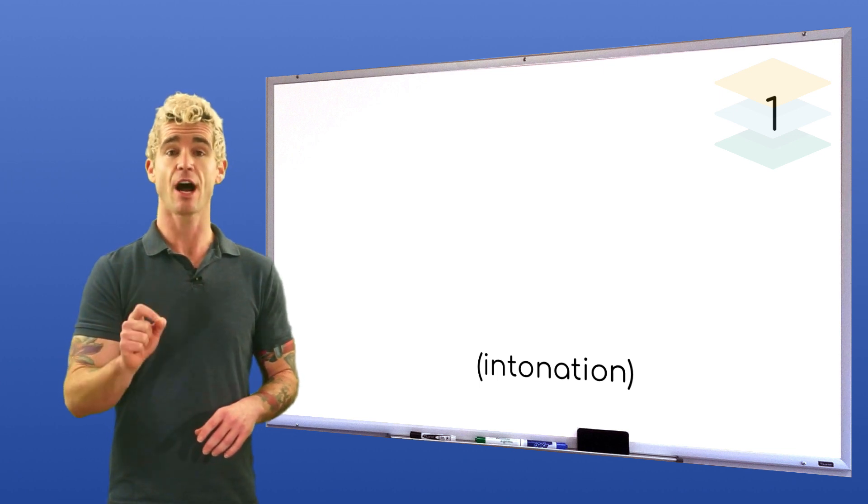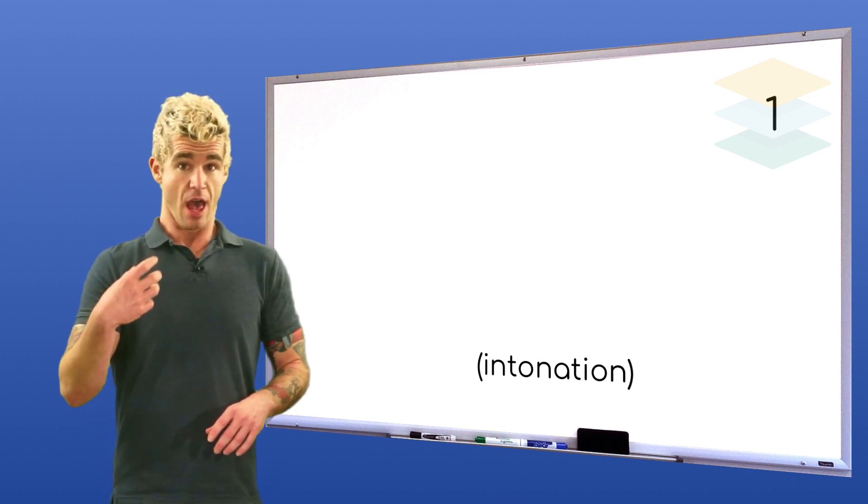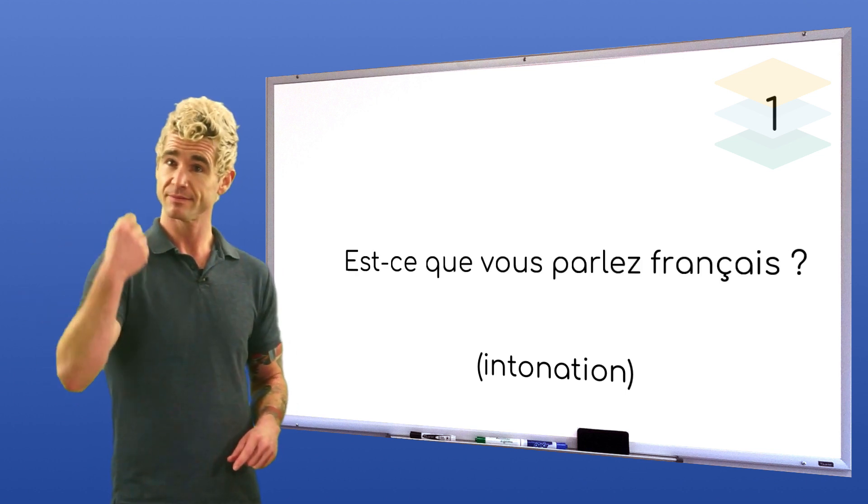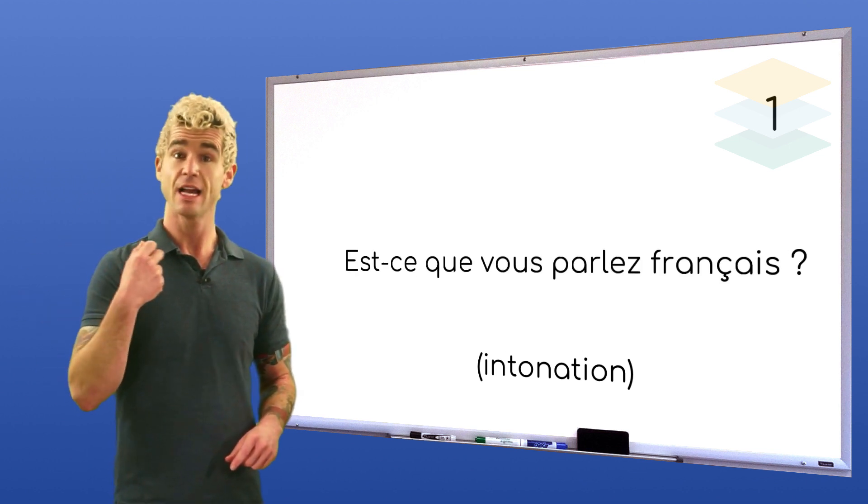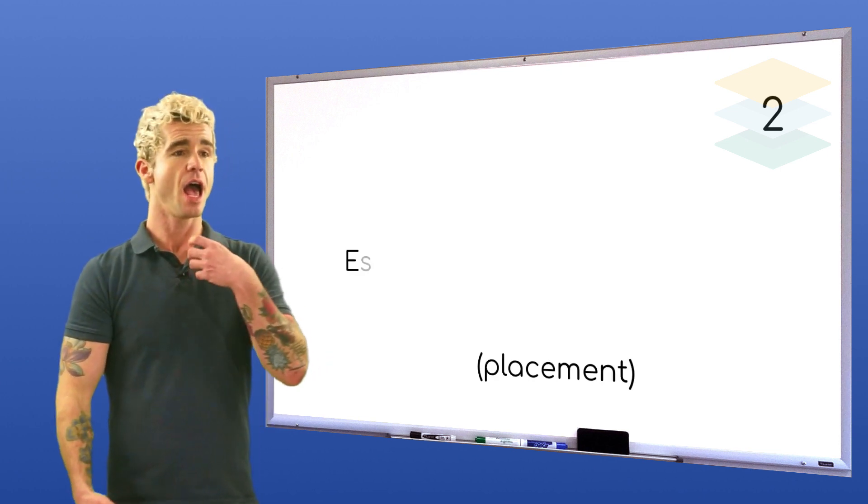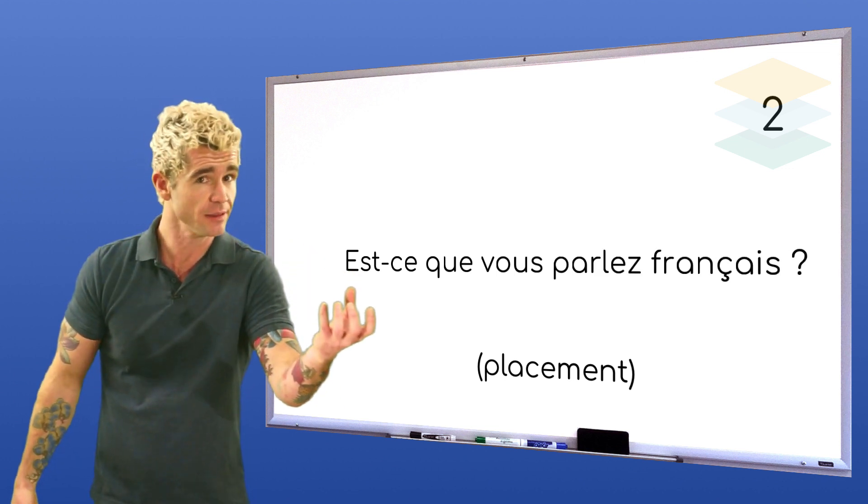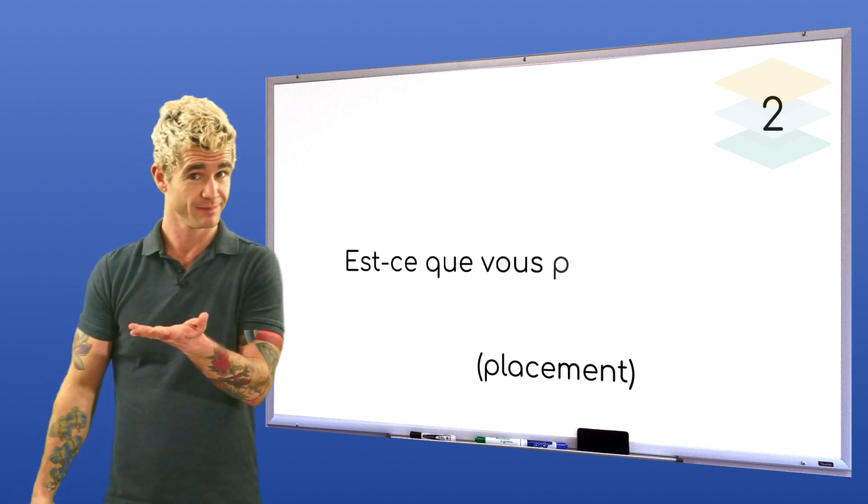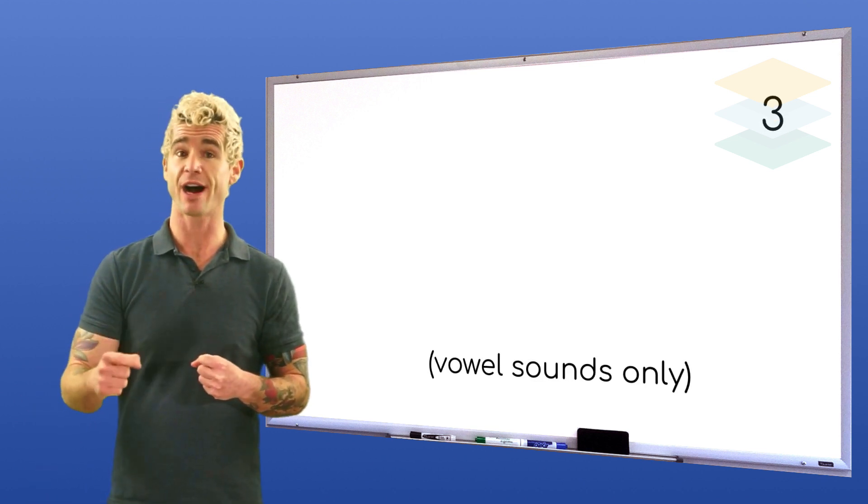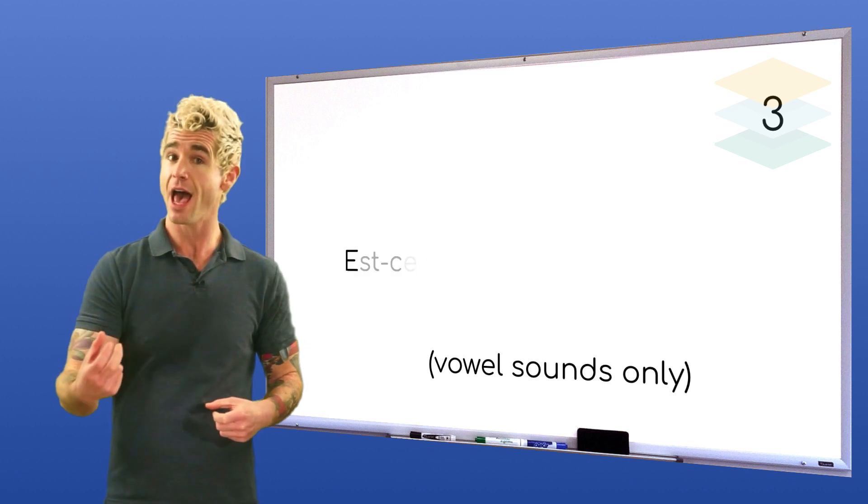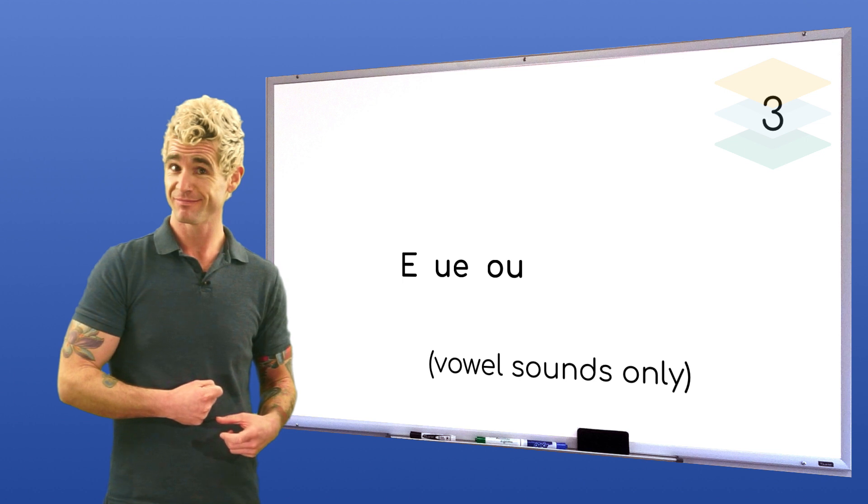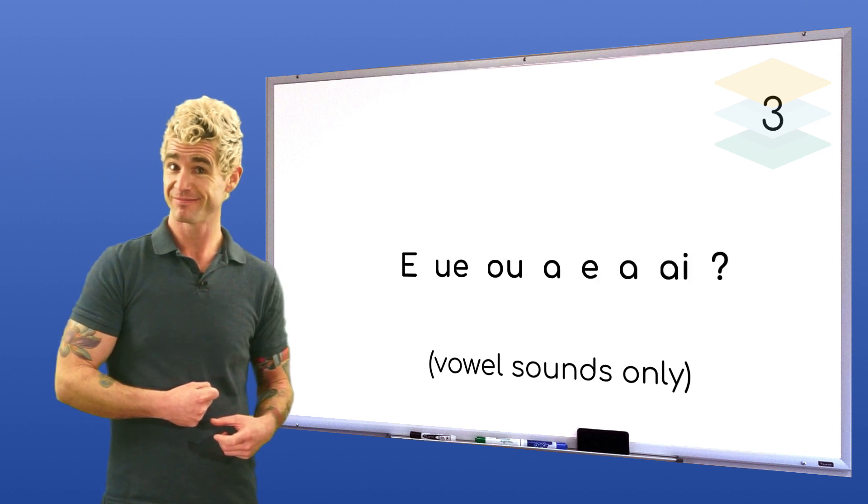Ready to go? Step one, listen to and copy the intonation. Step two, notice and imitate the forward vowel placement. Step three, say the sentence with the vowel sounds only. Good.